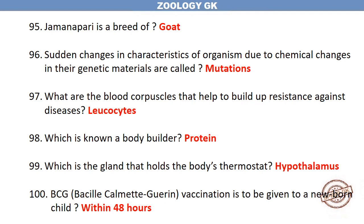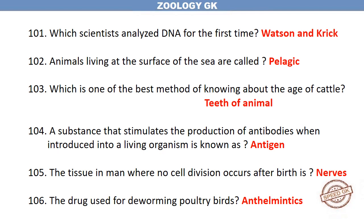BCG (Bacillus Calmette-Guérin) vaccination is to be given to a newborn child within 48 hours. Which scientists analyzed DNA for the first time? Watson and Crick. Animals living at the surface of the sea are called pelagic. Which is one of the best methods of knowing the age of cattle? The teeth of the animal. A substance that stimulates the production of antibodies when introduced into a living organism is known as an antigen.